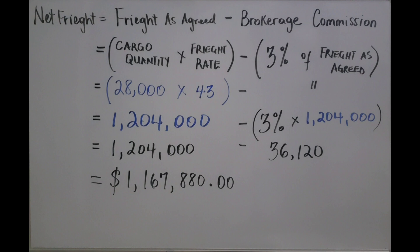As stated in the question, the cargo quantity is 28,000 and the freight rate is $43. Multiplying these gives a freight as agreed of $1,204,000. We then find 3% of $1,204,000, which is $36,120. Subtracting the brokerage commission: $1,204,000 − $36,120 = $1,167,880 net freight.